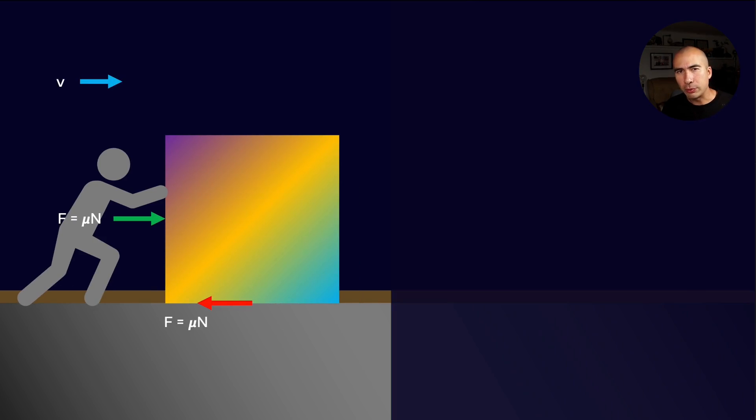So at very, very low speeds, what am I doing? I'm actually just pushing the block. And the lubricant is not getting between the block and the surface. So the coefficient of friction is still the same coefficient of friction, which is determined between the block as well as the ground.